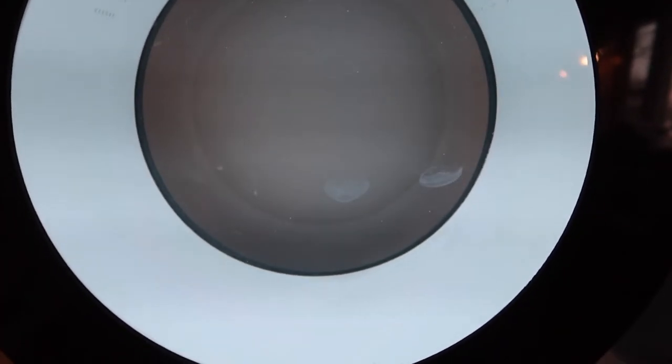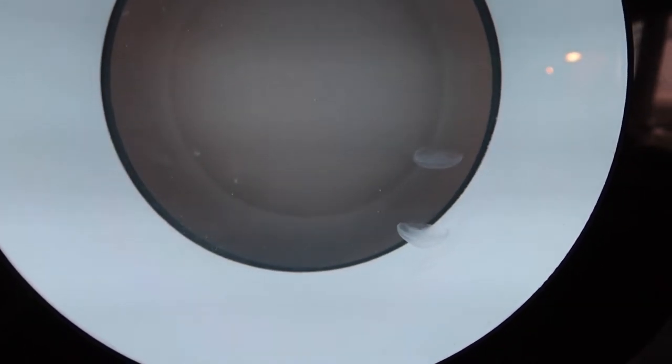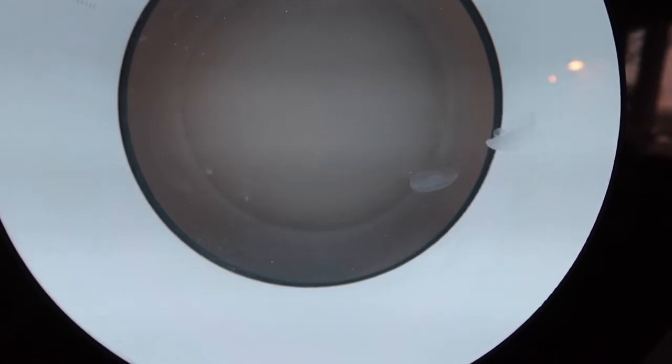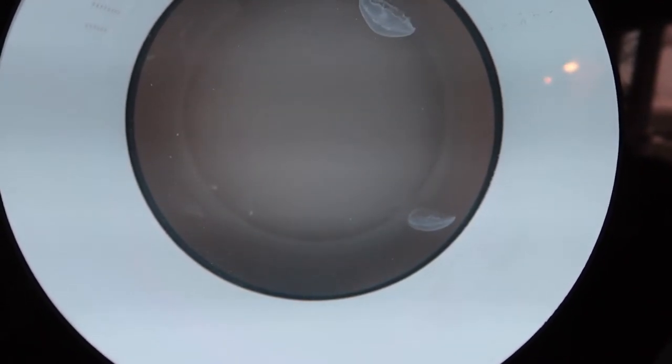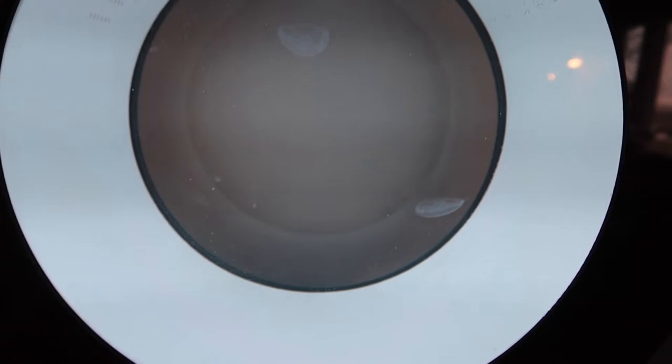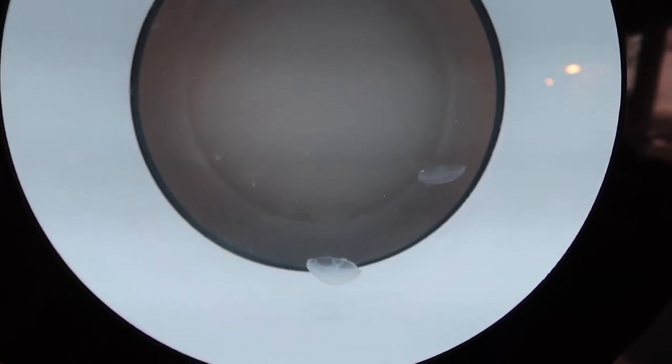All right, so both of the jellies are inside the tank right now. It is pretty common for them to be a little slow and sluggish during the first day. The reason why they're mostly upside down right now and not pulsing as often is because they're trying to acclimate to the salinity difference between the water that I took them from in the bag and then the water in the tank.